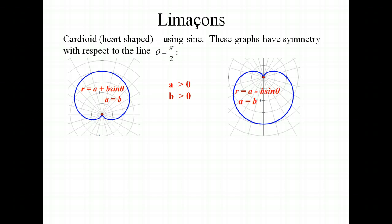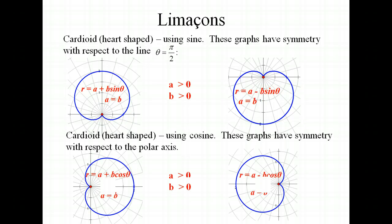The next one that we're going to talk about is the cardioid, which is the heart-shaped graph. Using sine for these, they're going to have symmetry with respect to the line theta equals pi over 2. The majority of the graph is going to be above the polar axis if there's a positive sign in between, and below the polar axis if there's a minus sign. With the cosine graph, you're going to have the majority of the graph to the positive side if there's a plus sign between A and B, and to the left if A and B have a minus sign. With cosine, you're going to have symmetry with respect to the polar axis. With the cardioid, A and B are exactly the same — the ratio of A to B is 1.